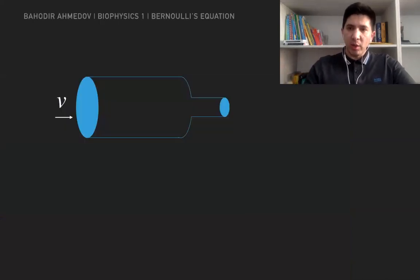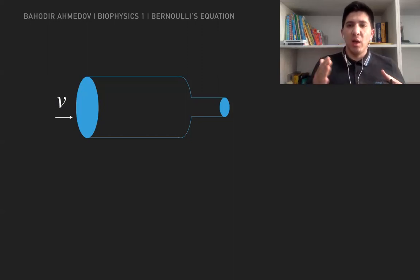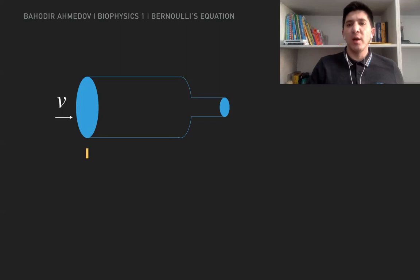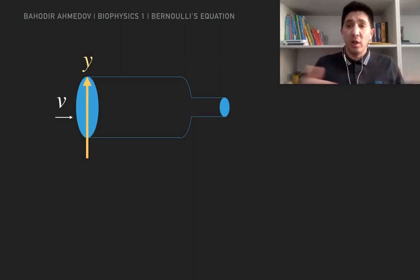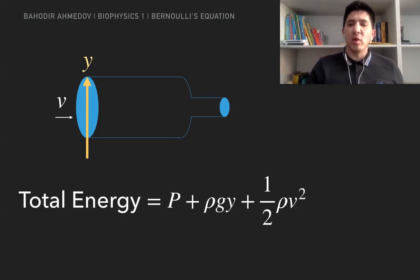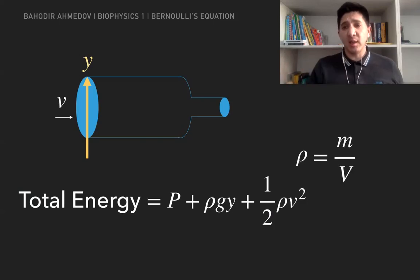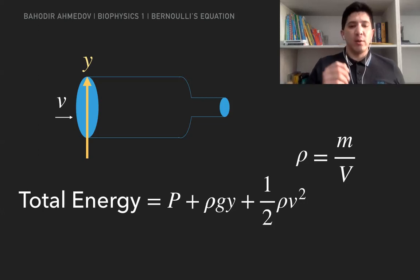So the continuity equation is really cool — it tells us the connection between the velocity and the cross-section area, but it doesn't really include lots of physics into the equation. For example, it doesn't include the pressure, the height of the fluid, or the density. So the Bernoulli equation is kind of an extension of the continuity equation, and it includes physical quantities like pressure and density.